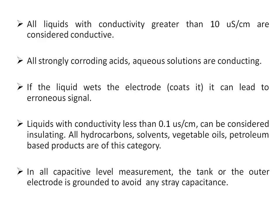All liquids with conductivity greater than 10 micro-siemens per centimeter are considered conductive; the unit of conductivity is siemens, also known as mho. Strongly corrosive acids and aqueous solutions are conducting. If the liquid wets the electrode it can lead to erroneous signals — a known problem with capacitance type sensors for conducting liquids. Liquids with conductivity less than 0.1 micro-siemens per centimeter are termed insulating; hydrocarbons, solvents, vegetable oils, and petroleum-based products fall in this category. In all capacitor level measurements, the tank or outer electrode is grounded to avoid stray capacitance and prevent errors.